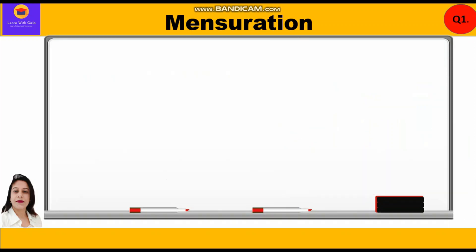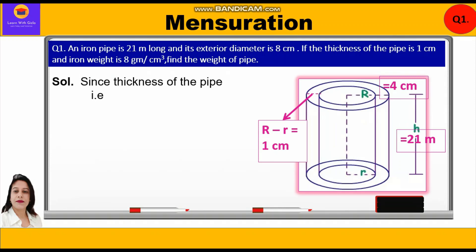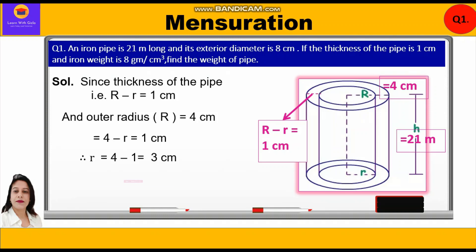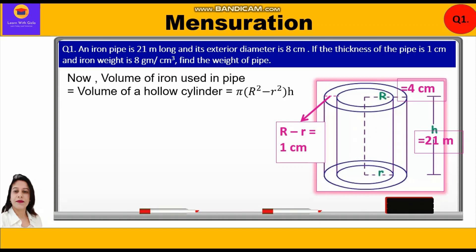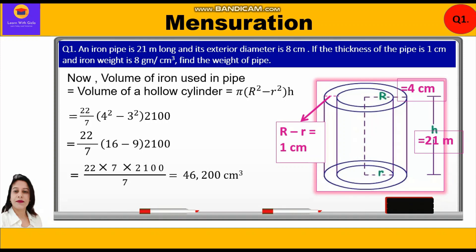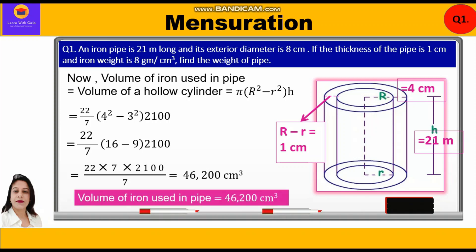Since thickness = outer radius − inner radius = 1 cm, and outer radius = 4 cm, we get 4 − r = 1, so inner radius r = 3 cm. Volume of iron used in pipe equals volume of hollow cylinder: πh(R² − r²). Substituting: (22/7)(4² − 3²)(2100) = (22/7)(16 − 9)(2100) = (22 × 7 × 2100)/7 = 46,200 cm³.